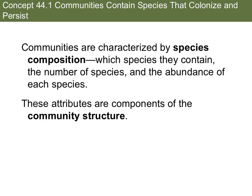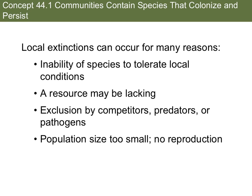Communities are characterized by species composition — which species they contain, the number of species, and the abundance of each species. These attributes are components of the community structure. If you change the types of species, the number of species, or the abundance of species, you change that community structure. And if you change that structure, you change how it functions. Local extinctions can occur — organisms can disappear and die off from a community. We call those losses extinctions.